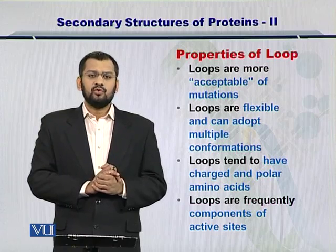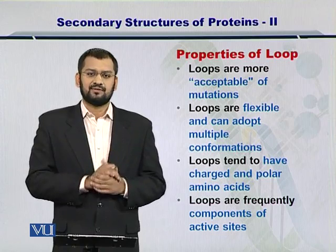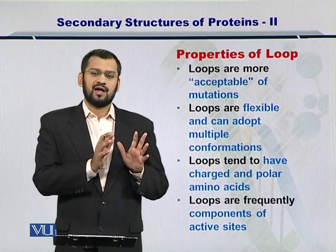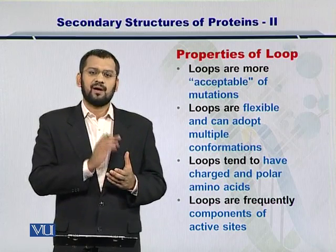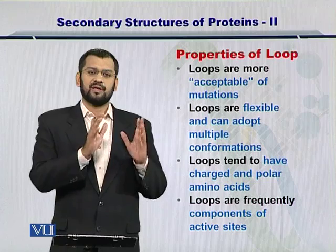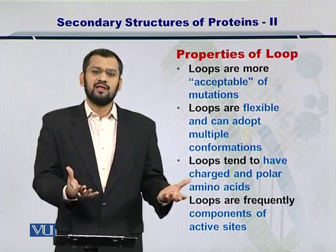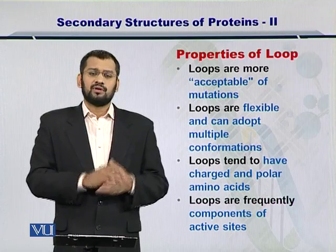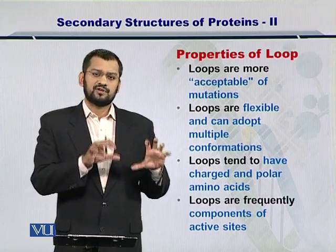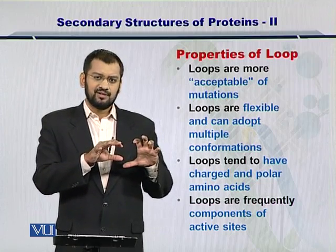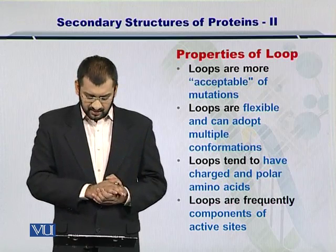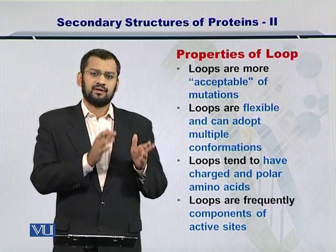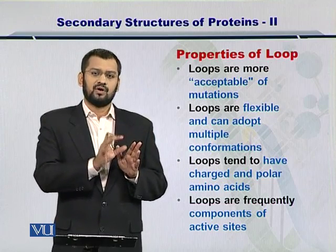The loops are open to accepting mutations or changes. Because their job is to keep the structure intact, they do not compromise on that even if the sequence changes. If the amino acid sequence changes and the loop disengages from the alpha helix or the beta sheet, then the entire protein structure will fall into parts. The loops are also flexible — the same reason that the job of the loop is to keep the structure intact means it has to be flexible. They can have multiple conformations as a result, so the same structure can be preserved by multiple conformations of the loop.